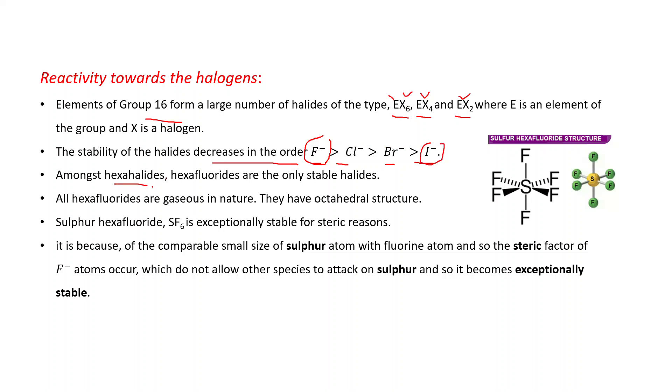Amongst hexahalides, hexafluorides are the only stable halides because fluorine is the most electronegative element. All hexafluorides are gaseous in nature and have octahedral structure. You can see the structure of SF6. SF6 is exceptionally stable for steric reasons because of the comparable small size of sulfur atom with fluorine atom. And so the steric factor of F atoms occur, which do not allow other species to attack on sulfur. That's why it is exceptionally stable and not hydrolyzed easily.